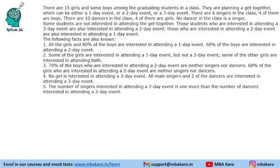They are planning a get-together which can be either a one-day event, a two-day event, or a three-day event. There are 6 singers in the class, 4 of them are boys — so 4 boys and 2 girls are singers. There are 10 dancers, 4 of them are girls — so 6 boys and 4 girls are dancers.